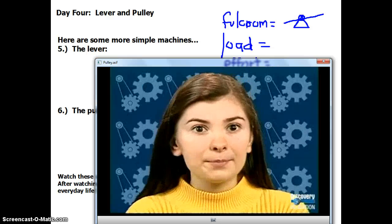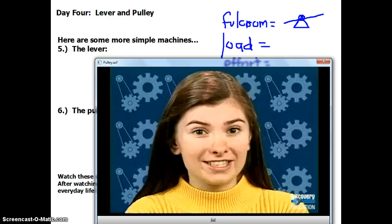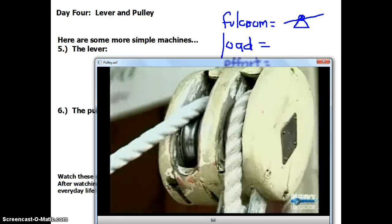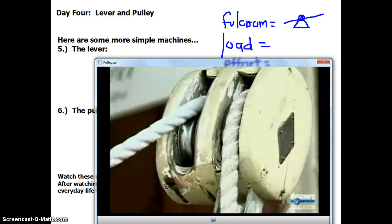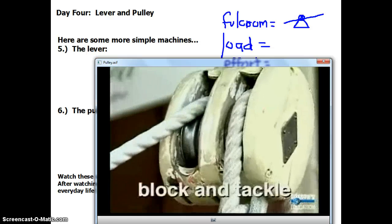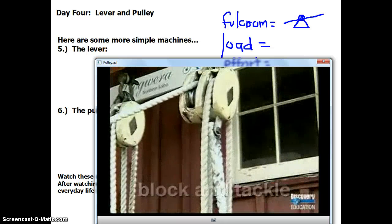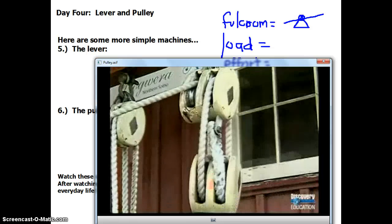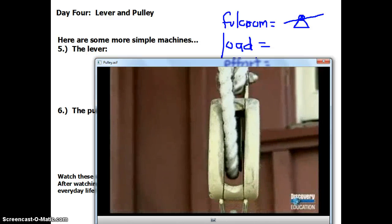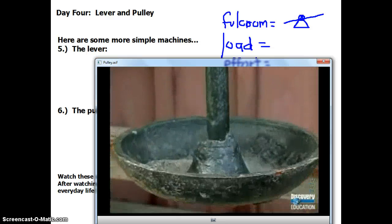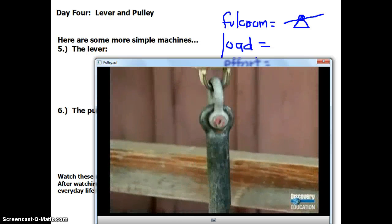Sometimes, people can join two or more pulleys together. Two or more pulleys together is usually called a block and tackle. A block and tackle is a system of ropes and pulleys used for lifting heavy loads. It makes it possible to lift a heavy weight over a short distance using a small force over a long distance.